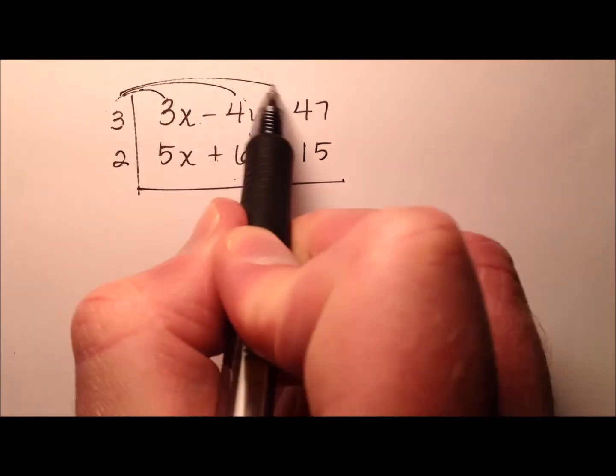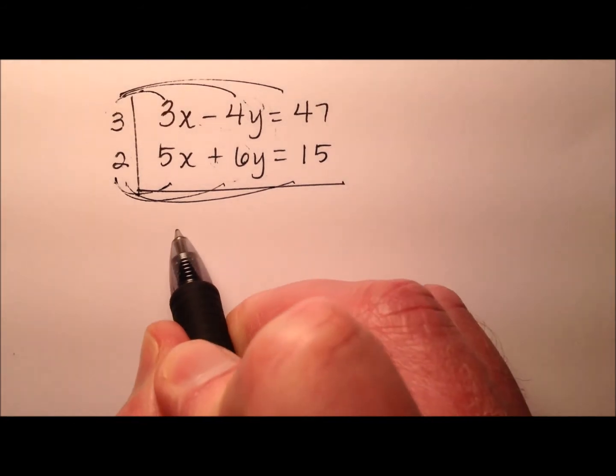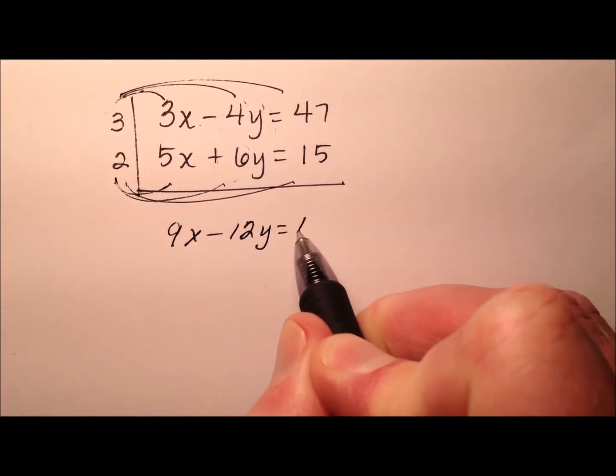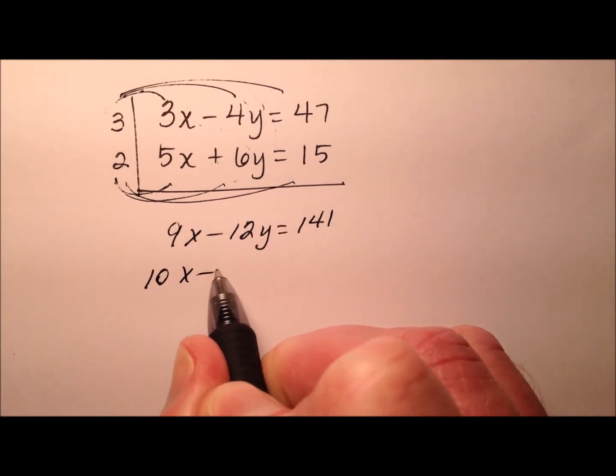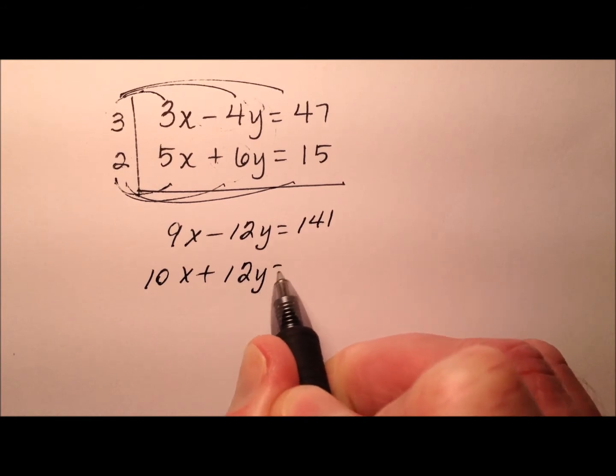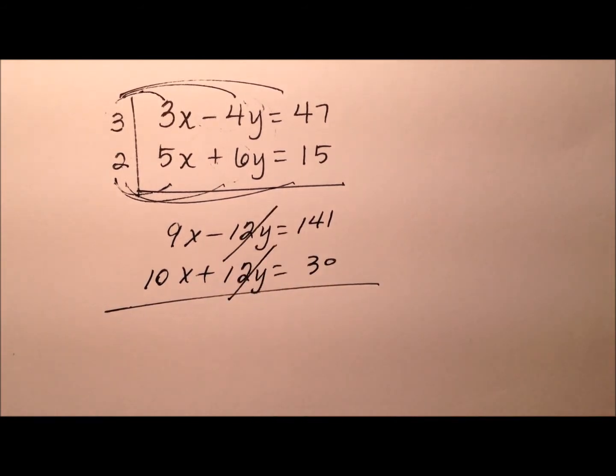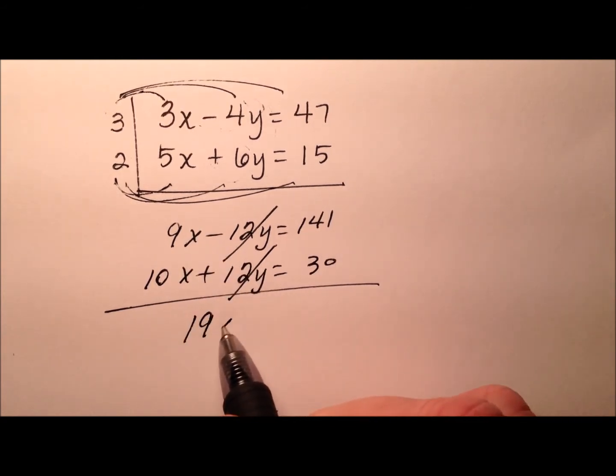So let's go ahead and distribute through this three on the top and the two on the bottom equation. So I have 9x minus 12y equals 141. And then on the second equation, 10x plus 12y equals 30. And our y's cancel. And again, these numbers are much smaller and easier to work with.